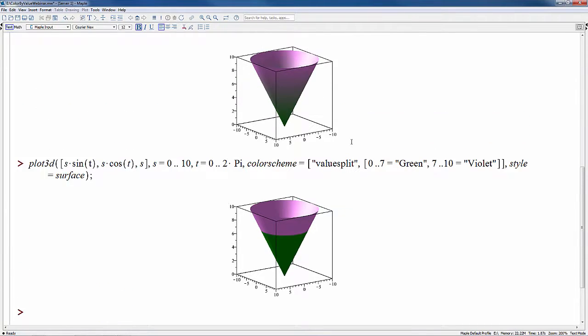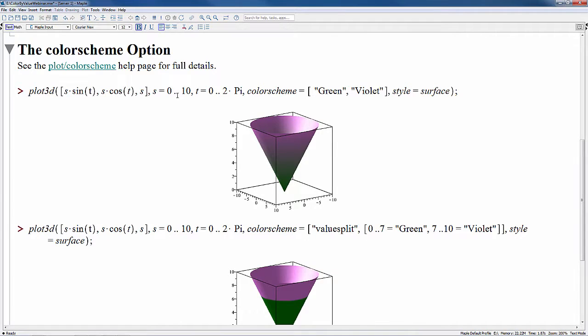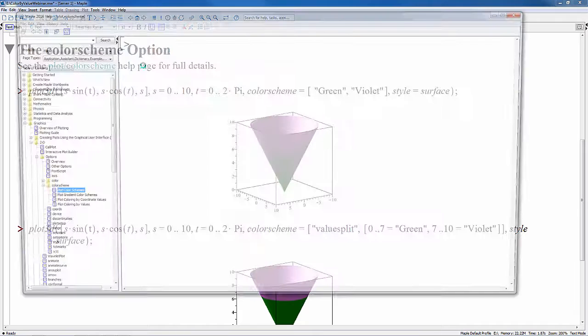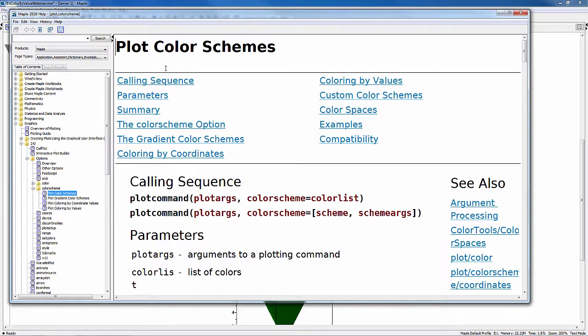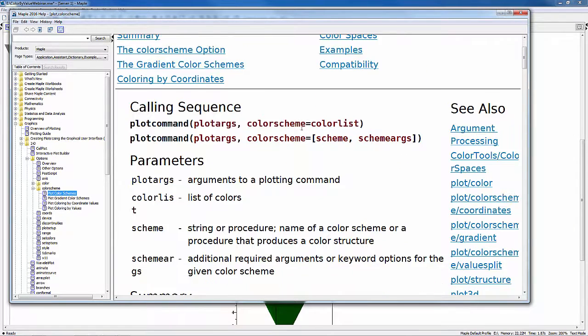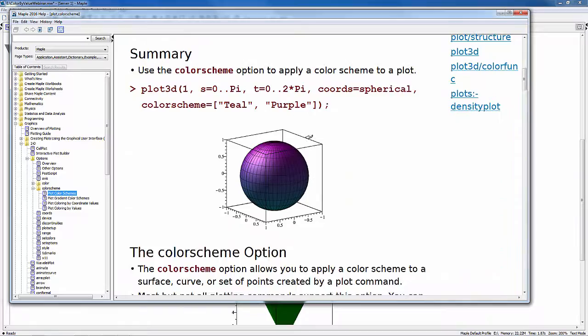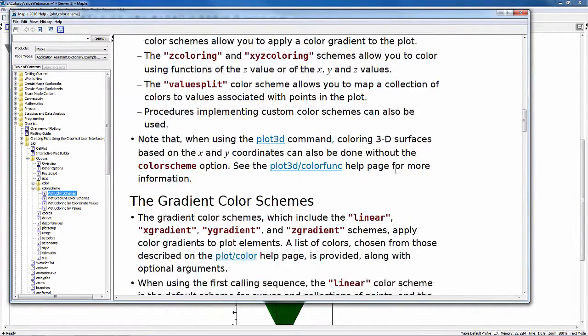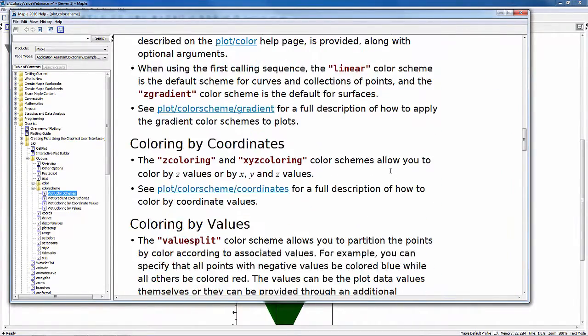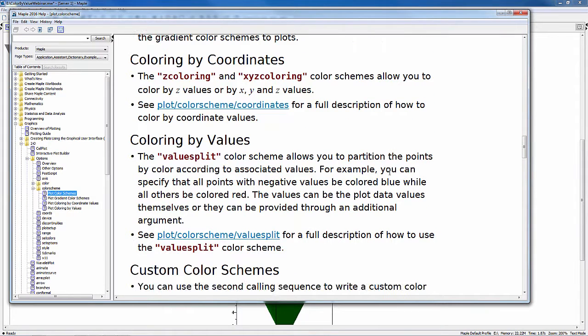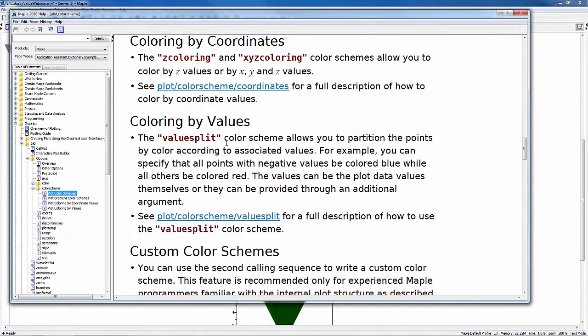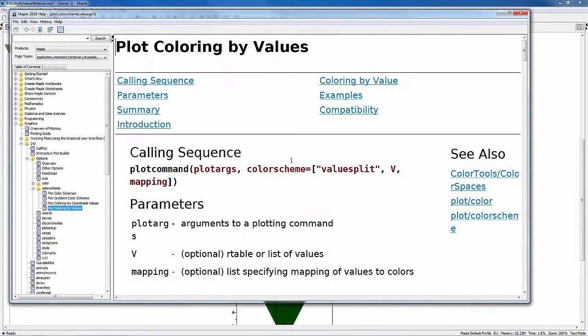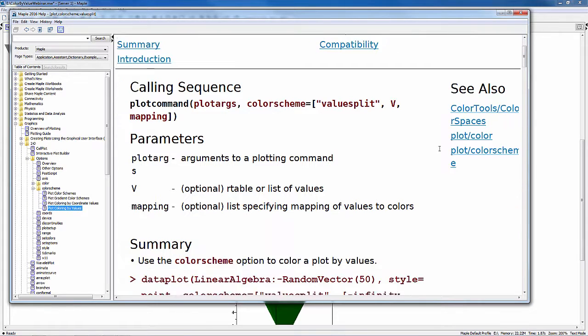Now, all of these different schemes are described on the plot color scheme help page and you could get more details about all the specific schemes that are available. The gradient color schemes, coloring by coordinates, custom schemes, and coloring by values, which is what we're talking about in this webinar. And there's a full help page for this particular feature as well.